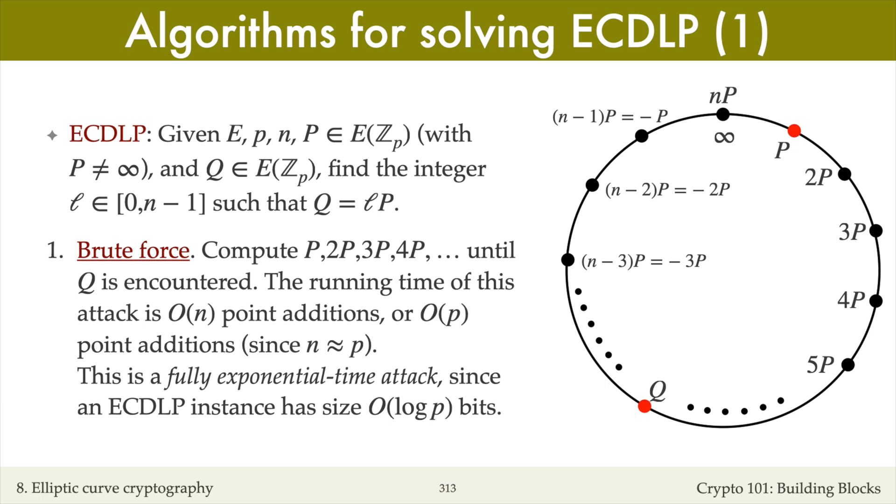This running time is fully exponential since an ECDLP instance, namely the equation E, the prime p, the number n of points on the curve, and the coordinates of the points P and Q, require O(log p) bits to write down. So the running time p is exponential in the input size log p.